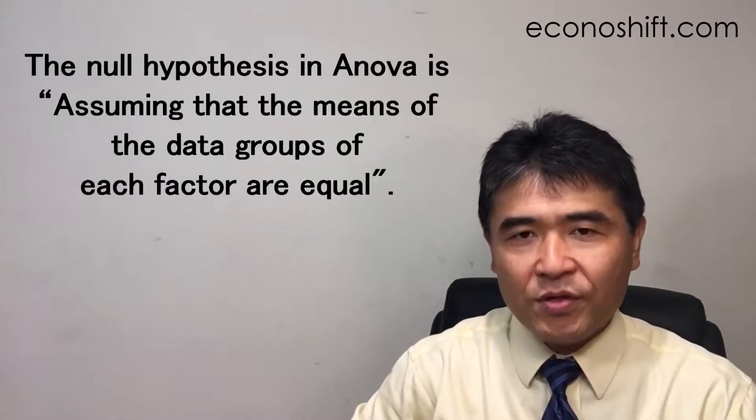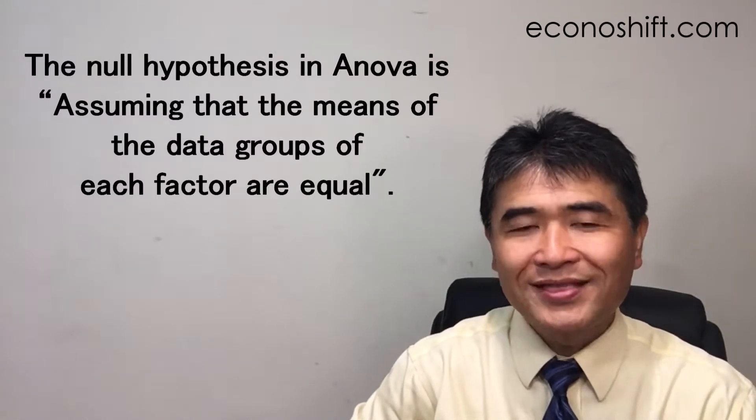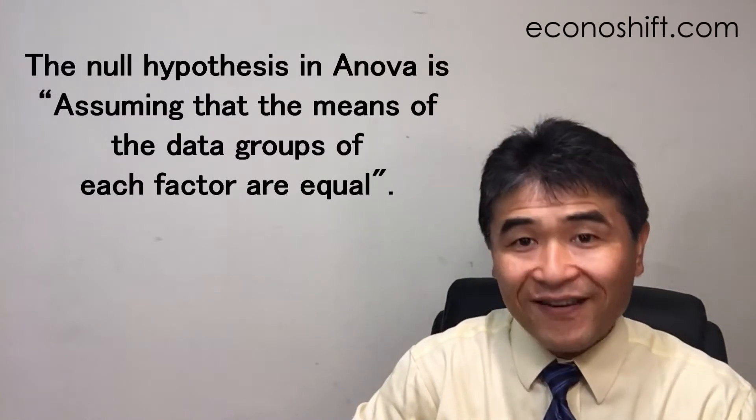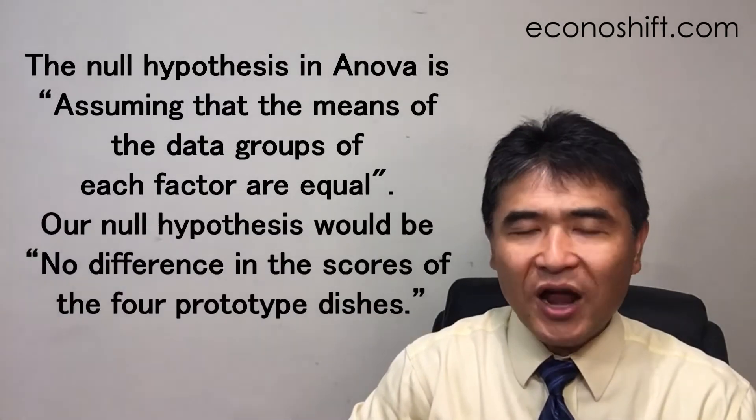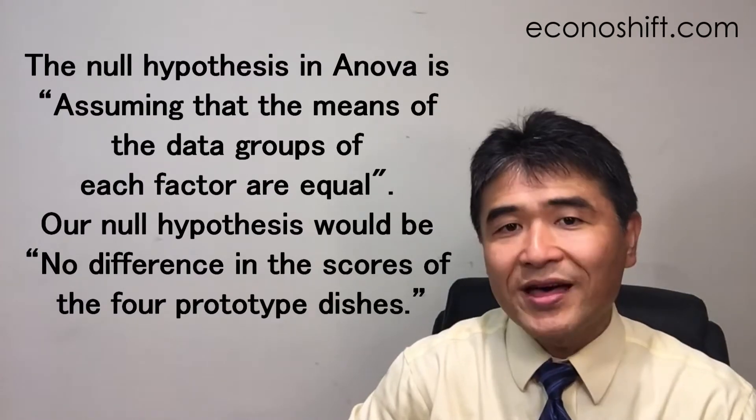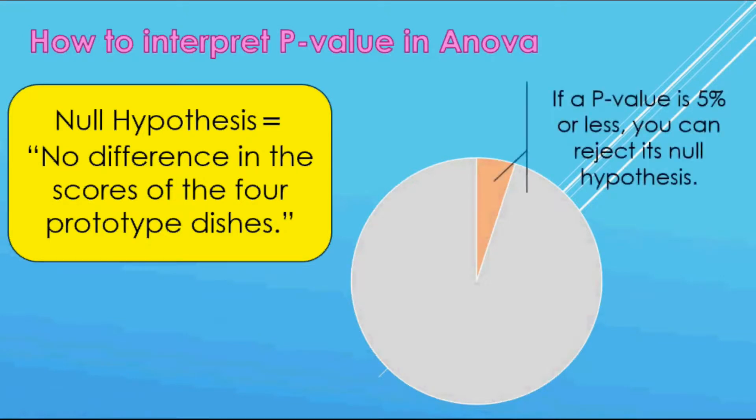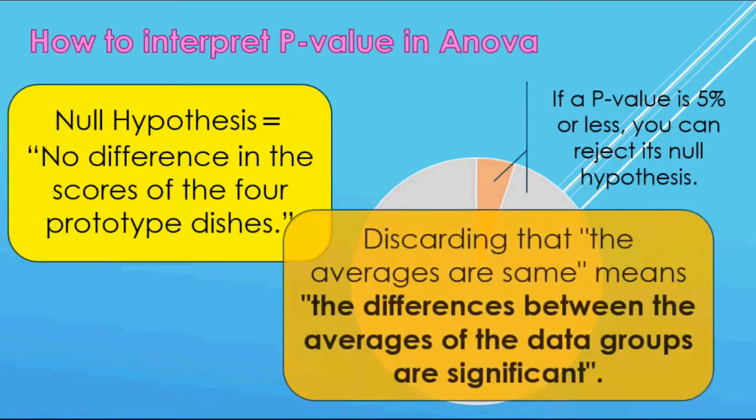The null hypothesis in ANOVA is assuming that the means of the data groups of each factor are equal. Our null hypothesis would be no difference in the scores of the four prototype dishes. Generally, if this percentage is 5% or less, you can reject a null hypothesis. In other words, discarding that the averages are same means the differences between the averages of the data groups are significant.